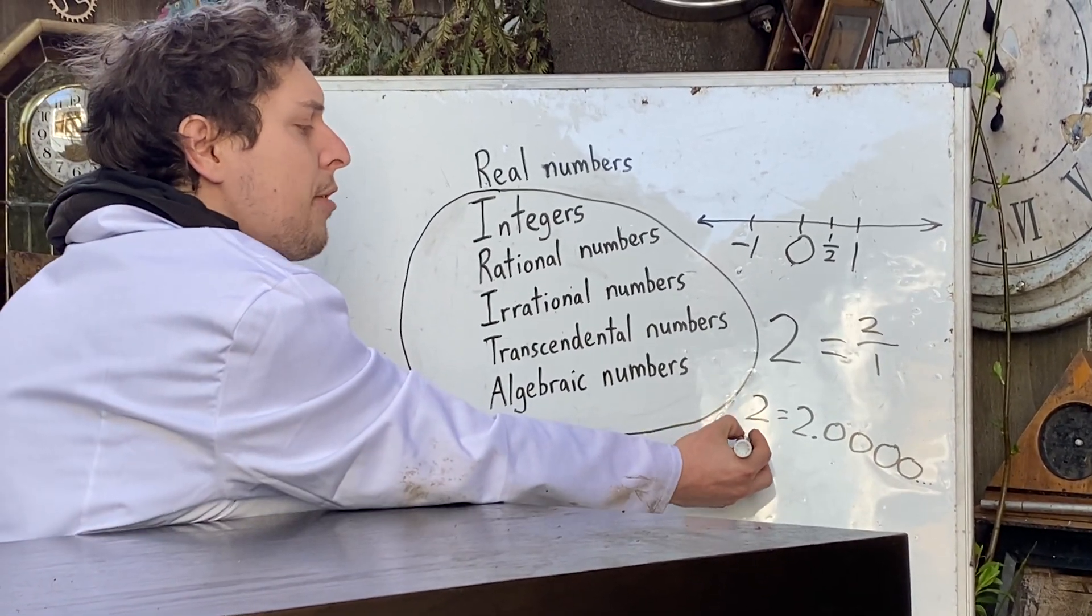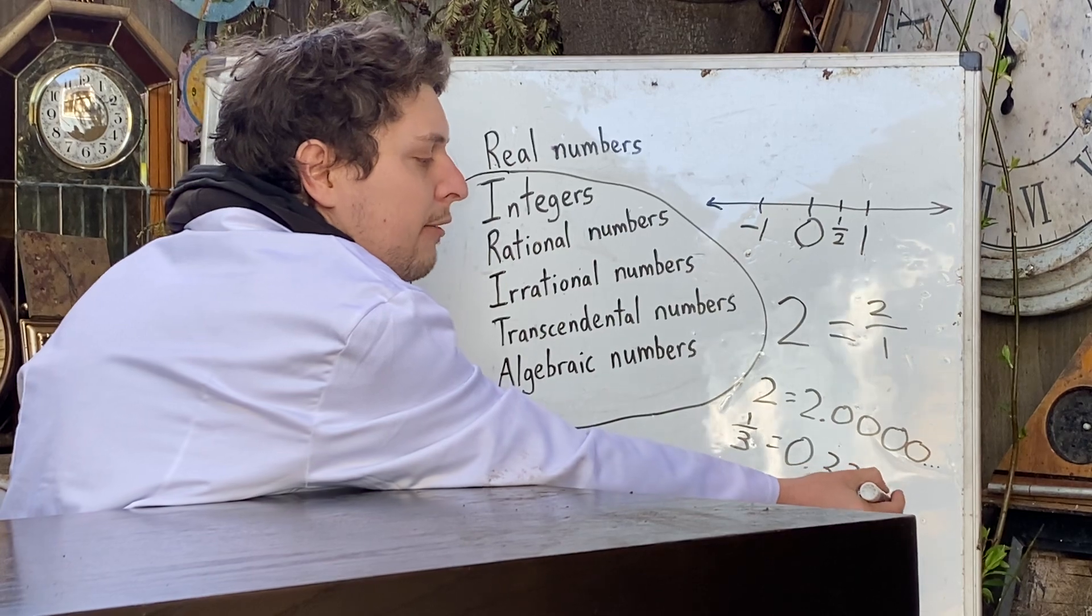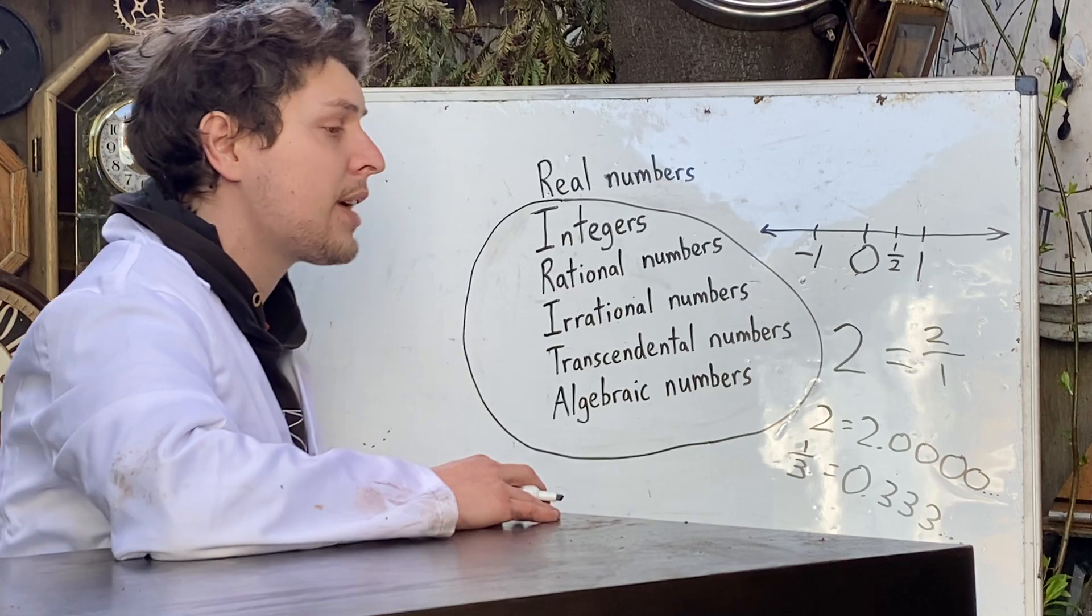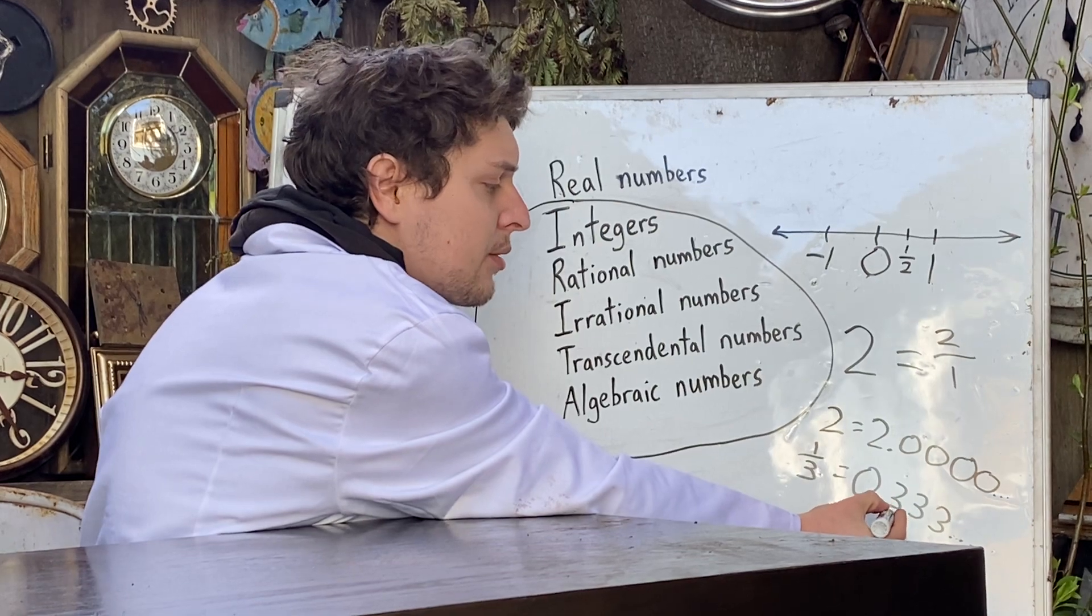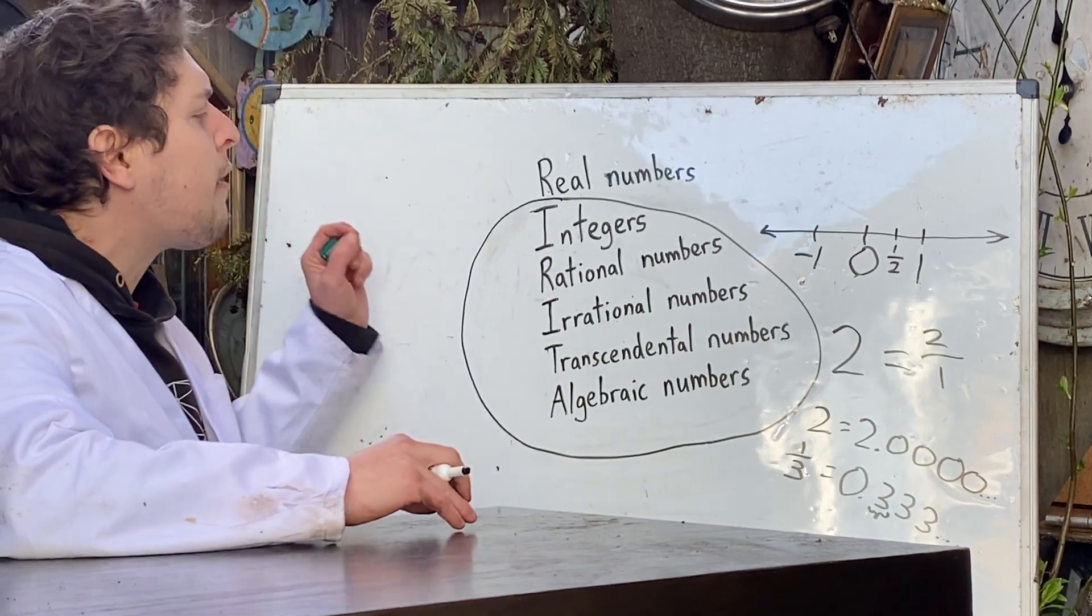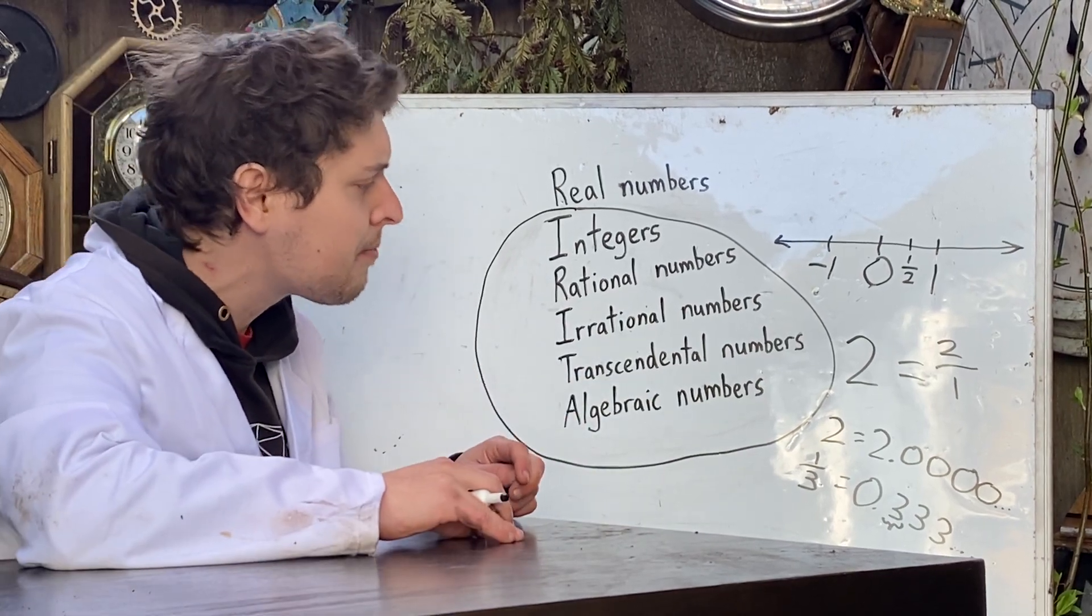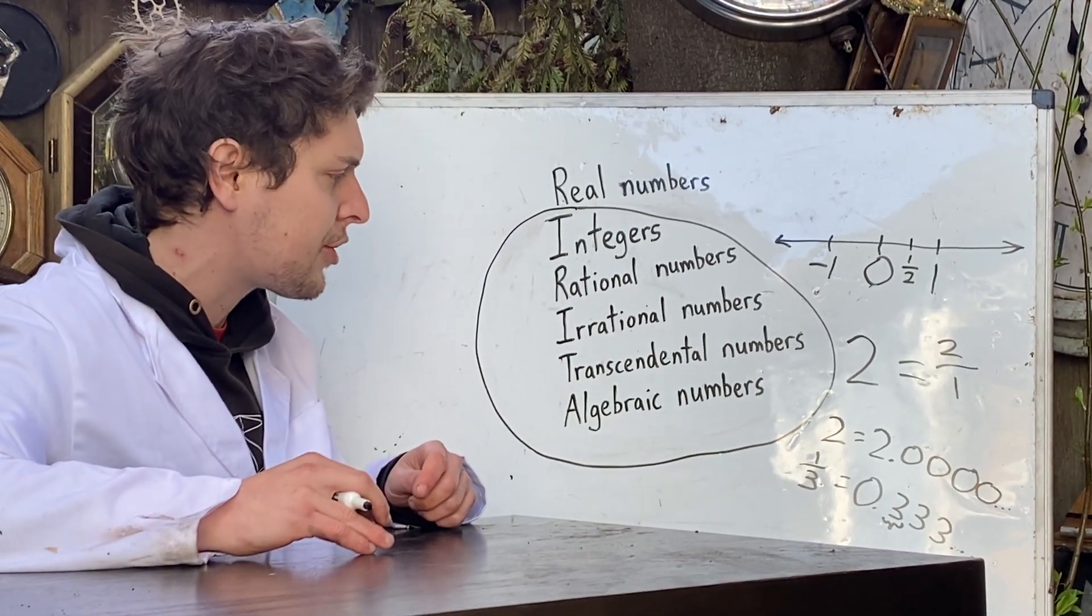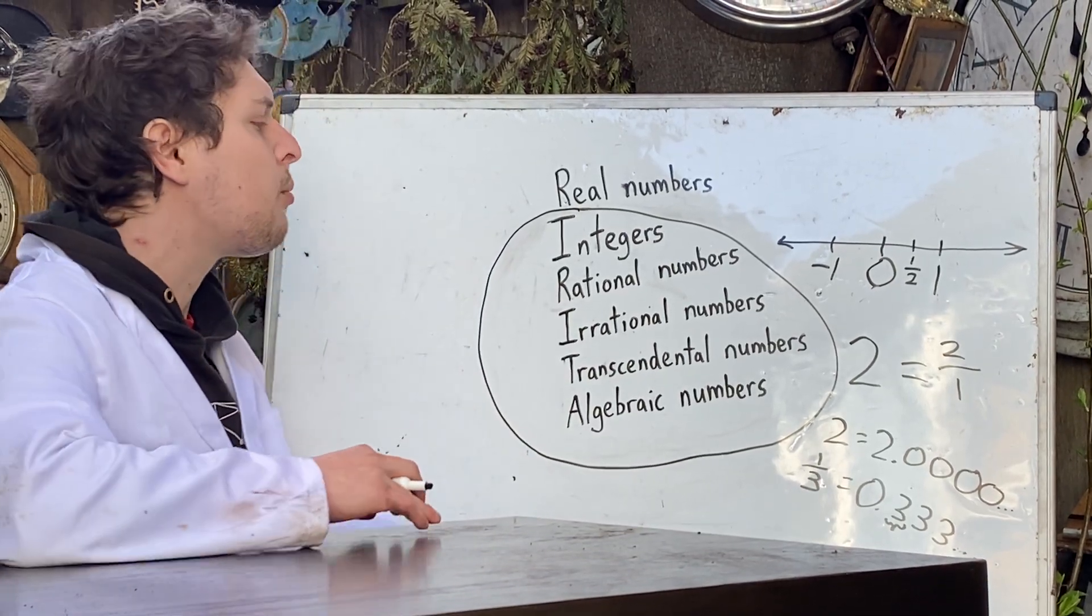In the case of something like one third, we get 0.3333 going on forever. And although it's an infinite non-zero decimal representation, it is periodic. It repeats this period length one thing an infinite amount of times. And if I ever try and write an irrational number in our base, or in binary or base 12 or 6, it will not have a period in its infinite decimal representation.